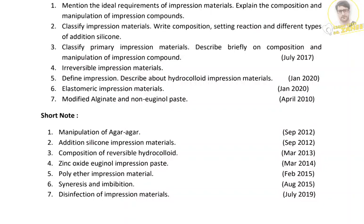Coming to the next question, we have to write what is an impression, then write regarding the hydrocolloid impression materials, which are alginate and agar. The hydrocolloid impression materials are agar and alginate. For agar, we have to give what is agar, its composition, its uses, its advantages and disadvantages.